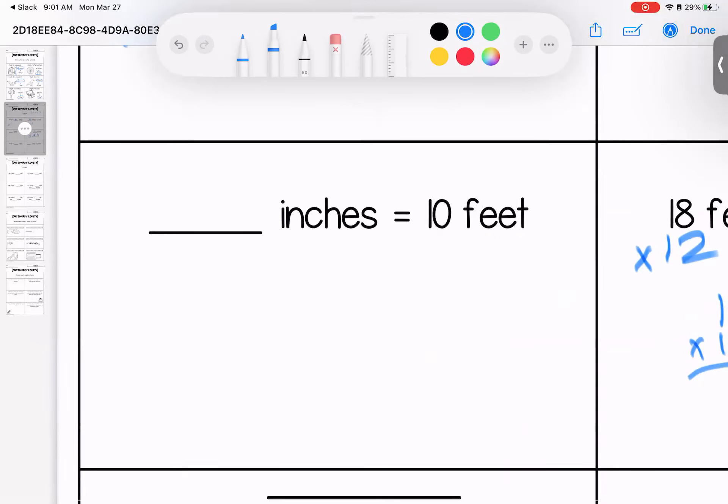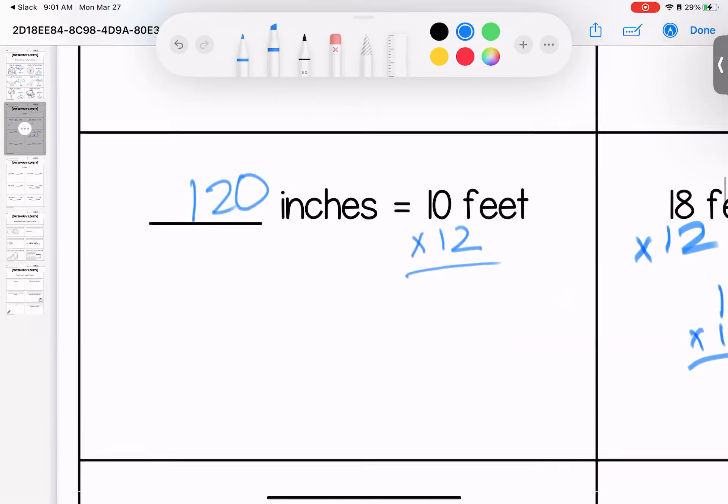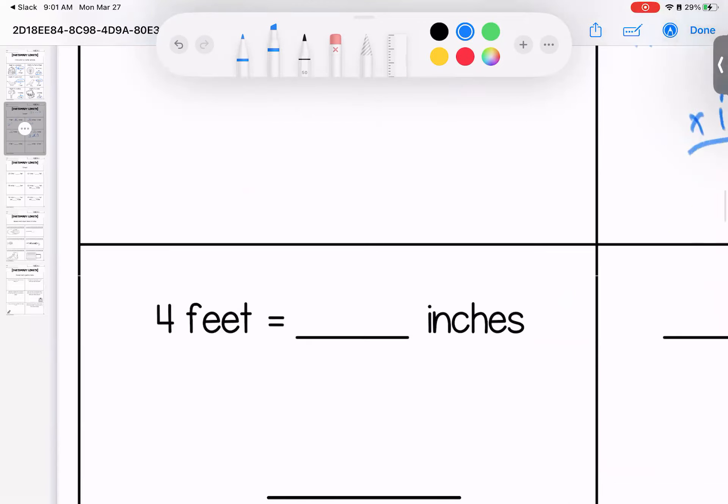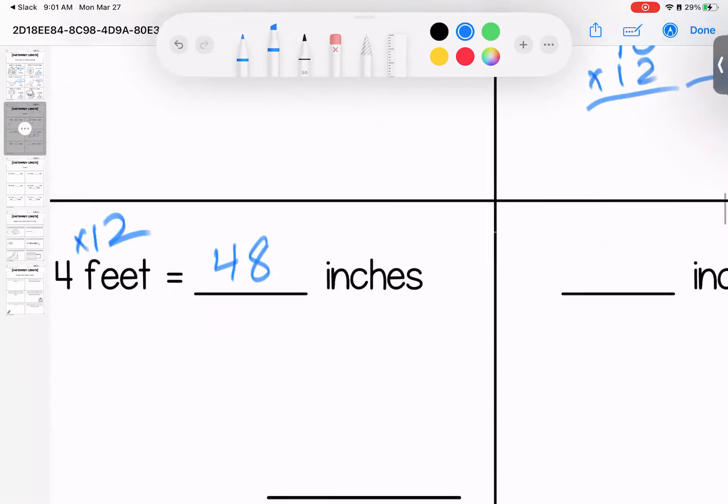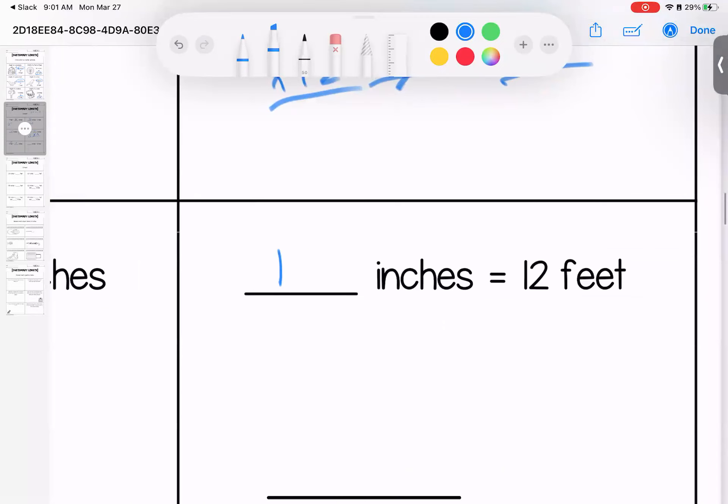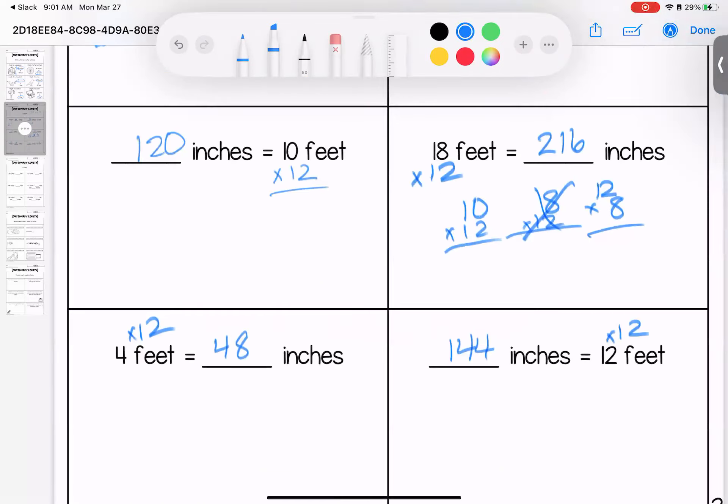How many inches are in 10 feet? 120 because we can times this by 12. 4 feet is 48 inches. Again, timesing that by 12. And then 12 feet gives us 144 inches by doing that double multiplication. Any questions? Bring them with you to class.